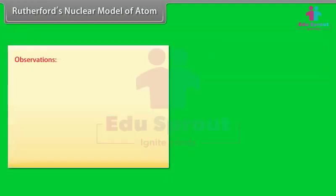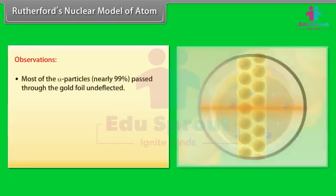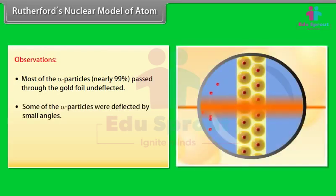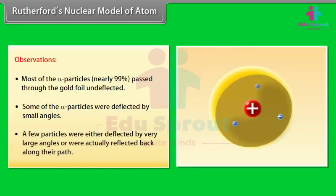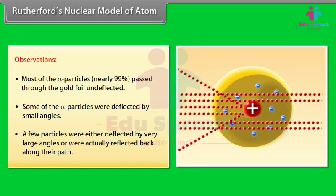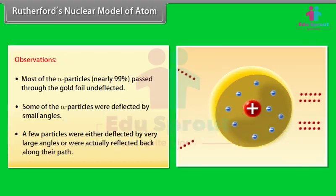Observations: Number 1 — Most alpha particles, nearly 99%, passed through the gold foil undeflected. Number 2 — Some alpha particles were deflected by small angles. Number 3 — A few particles were either deflected by very large angles or were actually reflected back along their path.